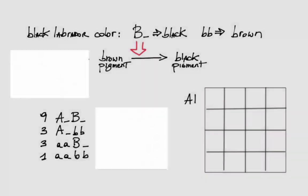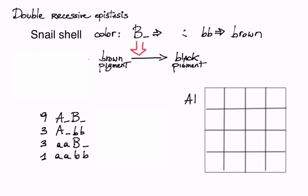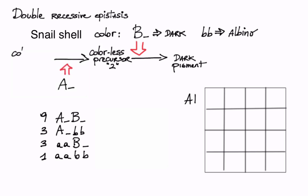Last, let's consider the case of double recessive epistasis in the snail. Here, the B gene converts colorless precursor 2 into a dark pigment, resulting in a dark shell. The A gene is epistatic because it is needed for the conversion of upstream colorless precursor 1 into precursor 2. Consider the pathway. It yields dark pigment only if both the A and the B genes have the dominant, that is, active allele.